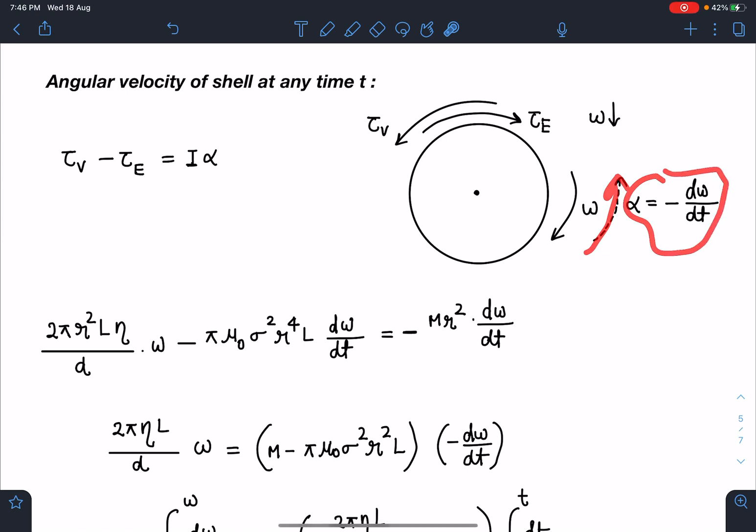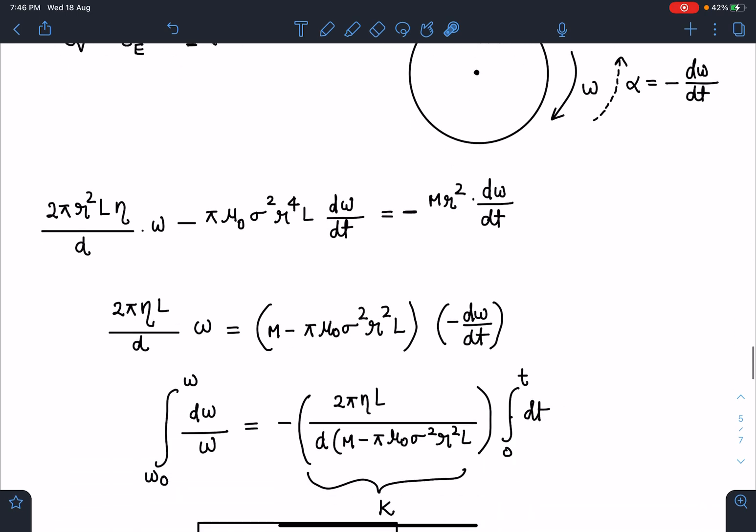The value of α is -dω/dt. Viscous torque will be in this direction which is actually decreasing the omega, and its effect will be more compared to the effect of electric field. So τ_viscous - τ_electric is the net torque, and we can write it as I·α.